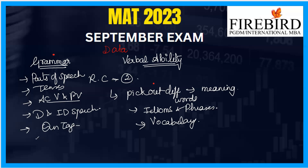More rules are available for error spotting, so try to learn the error spotting rules. It will definitely help you to score four to five marks in the verbal ability part. Before starting with your verbal ability, you should learn these concepts and their rules: parts of speech, tenses, active voice and passive voice, direct and indirect speech, and question tags.